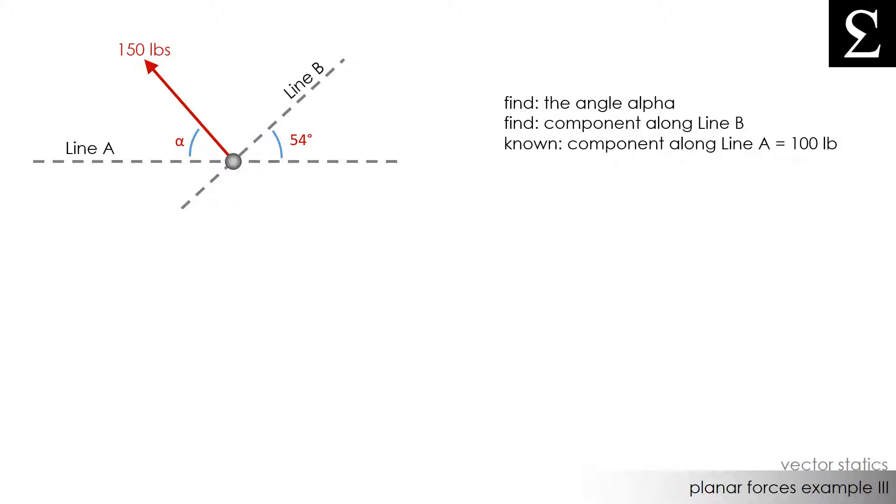In other words, we want to find the component acting along line B knowing that this component is 100 pounds. Note that none of this is to scale. We'll be using a trigonometric approach to solve this problem.